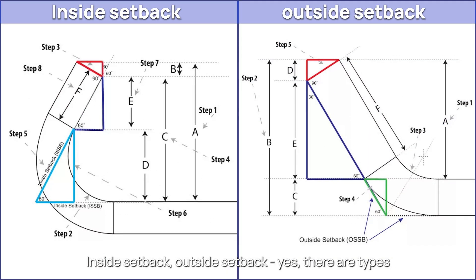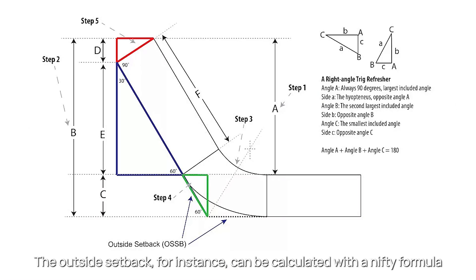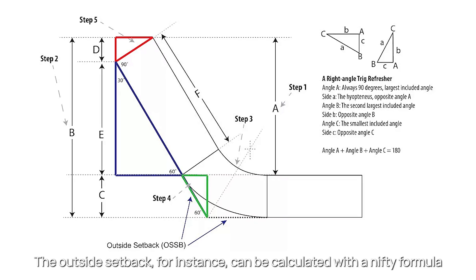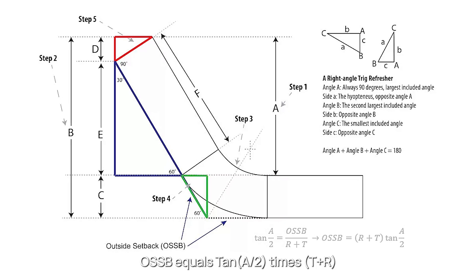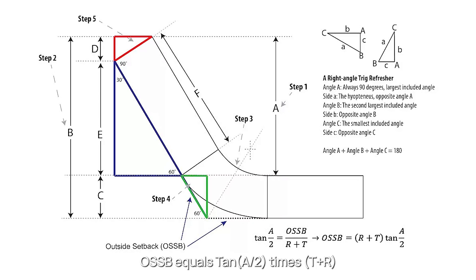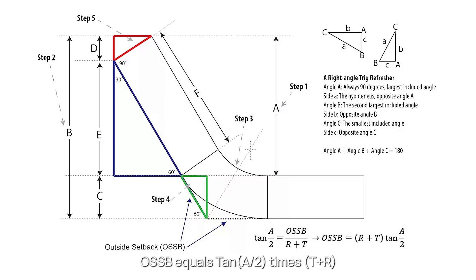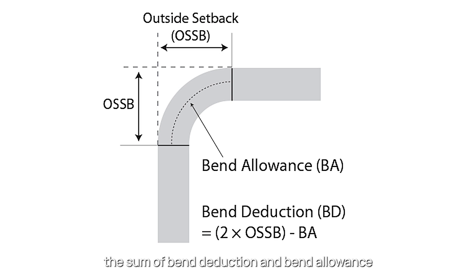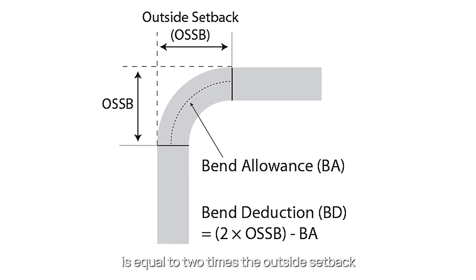Inside setback, outside setback — yes, there are types. The outside setback, for instance, can be calculated with a nifty formula: OSSB equals tan(A/2) times (T + R). And here's a gem: the sum of bend deduction and bend allowance is equal to two times the outside setback.